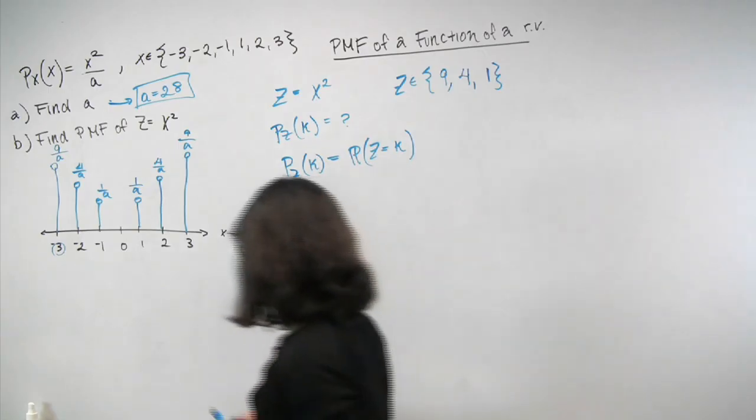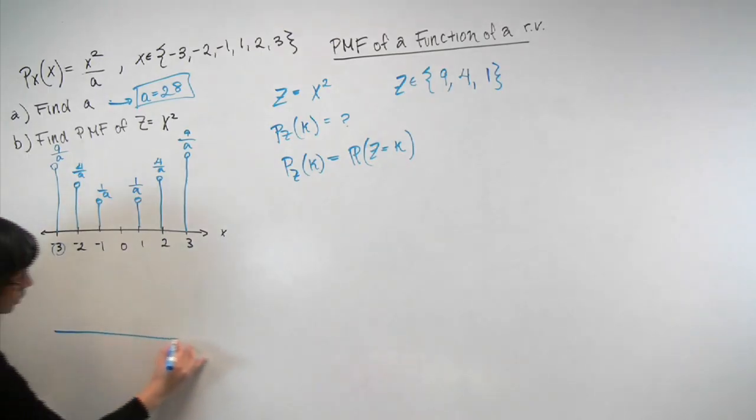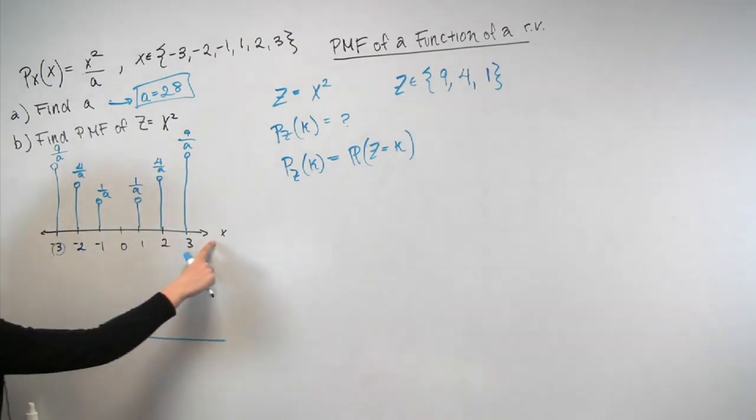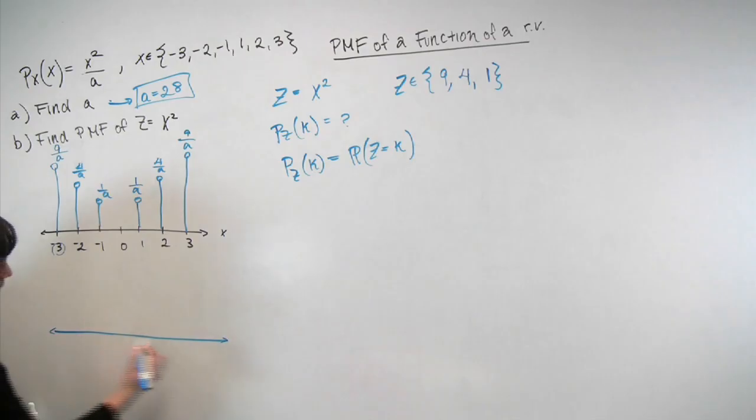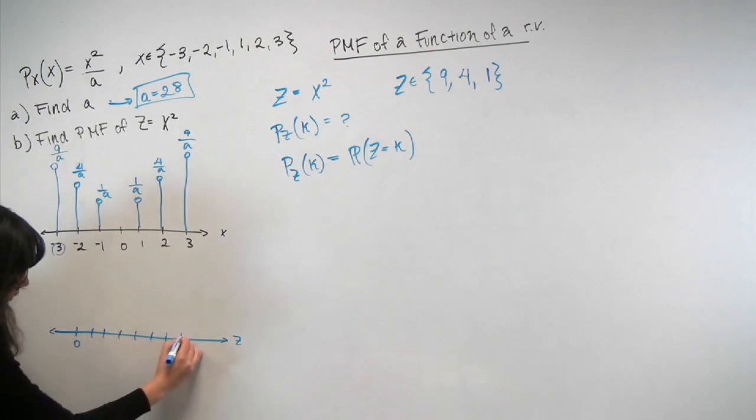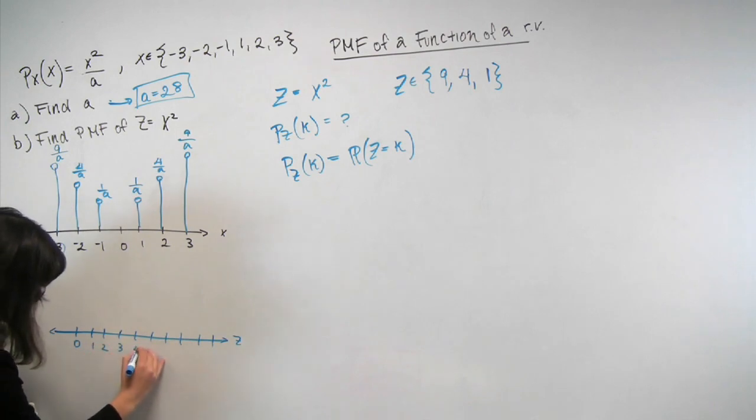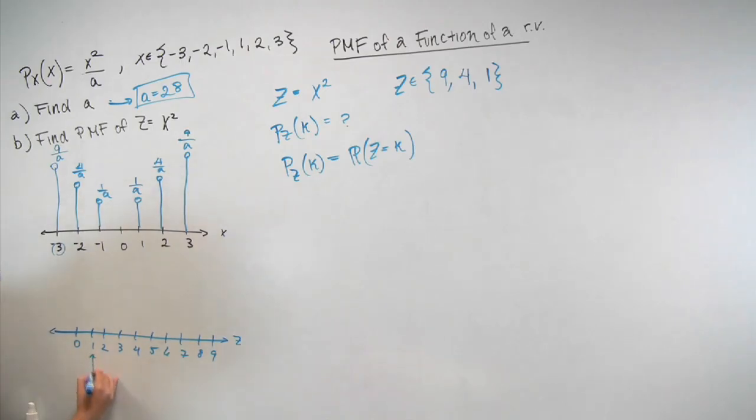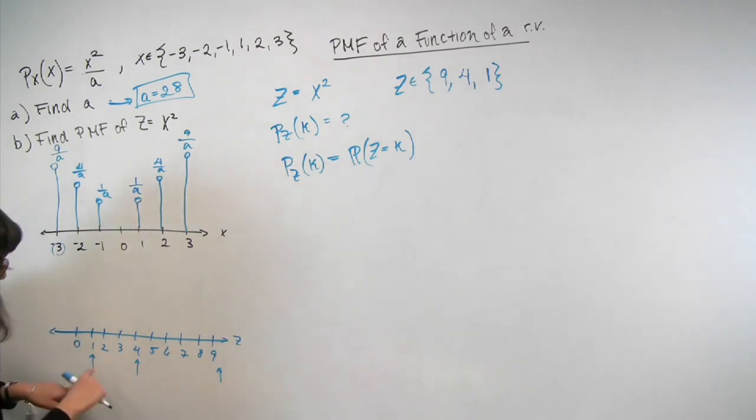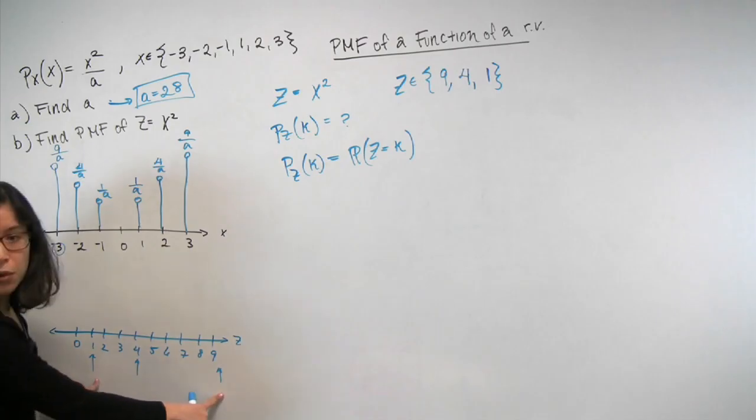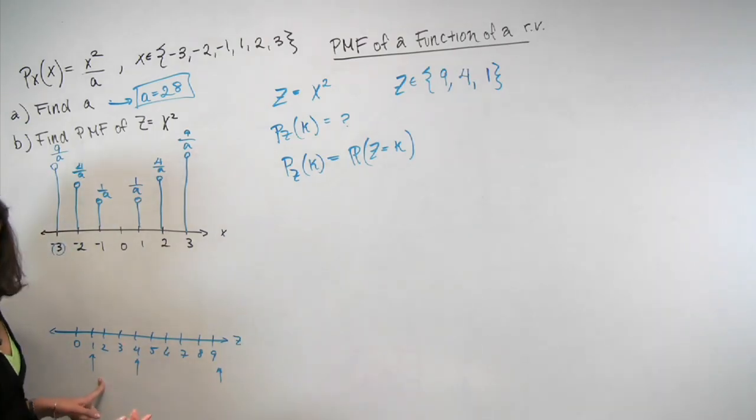So now, let's come down and sort of plot a new picture. So before, on this axis, I was plotting the value that the random variable x takes on. Now, I'm going to plot the values that the random variable z can take on. So z can take on, let's see, 1, 2, 3, 4, 5, 6, 7, 8, 9. Let me just number these really quickly. So z can take on a value of 1. It can take on a value of 4. And it can take on a value of 9. And as we argued before, these three points are the only ones that should have any probability mass over it.